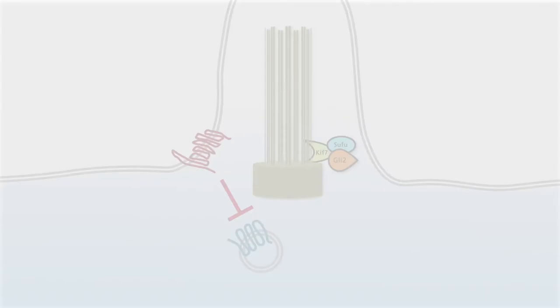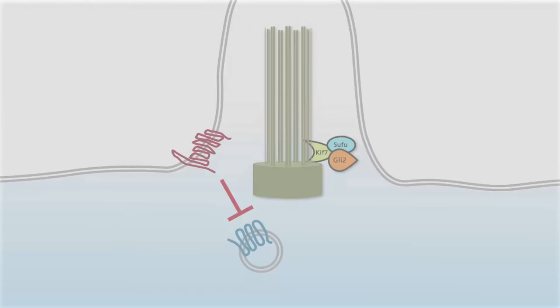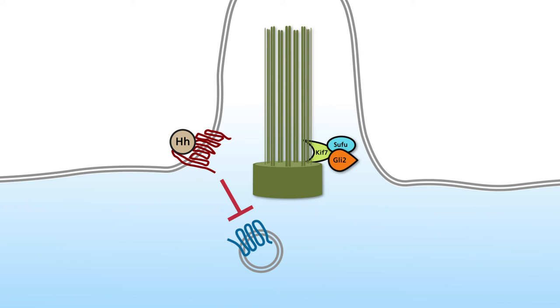Hedgehog binds to its receptor patched, localized at the base of the primary cilium. Upon binding of Hedgehog to patched, the ligand receptor complex is internalized and directed to the lysosome.